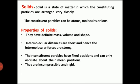Solid substances have various characteristic properties. The first property: they have definite mass, volume, and shape. For example, a duster has its own mass and definite volume and shape. The second property: intermolecular distances are short and hence intermolecular forces are strong. As seen in the previous diagram, the particles in a solid are very close to one another, creating strong intermolecular forces among themselves.